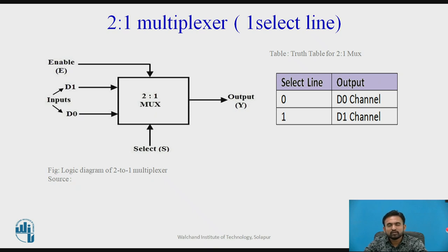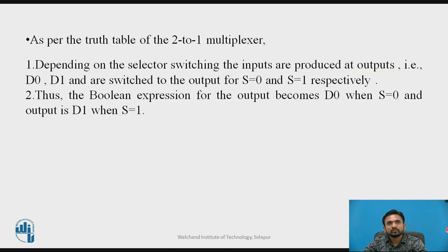If you are giving the input for control signal as 0, your D0 input channel will switch from input section to the output section. And at the same time your enabled line should be always gets enabled.